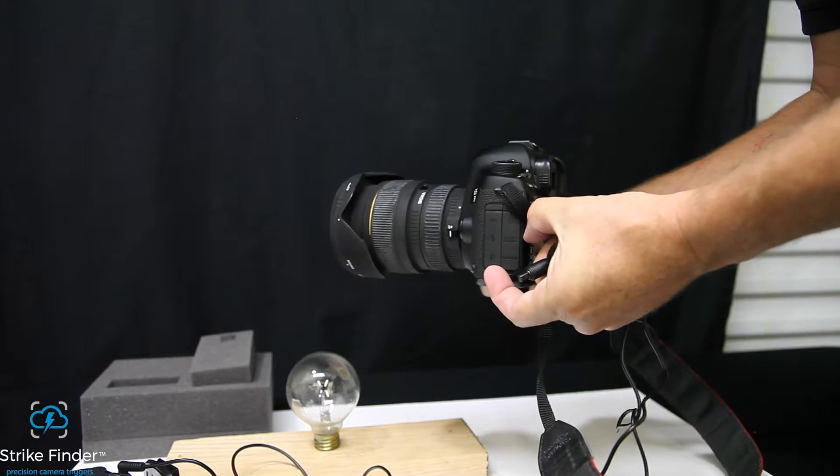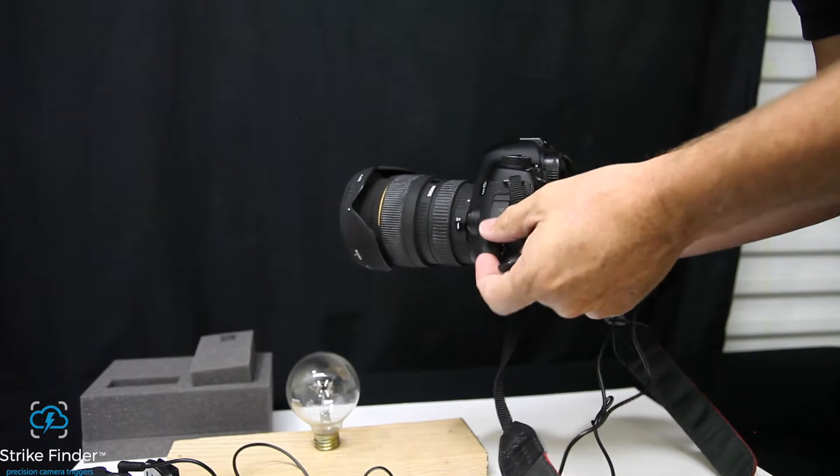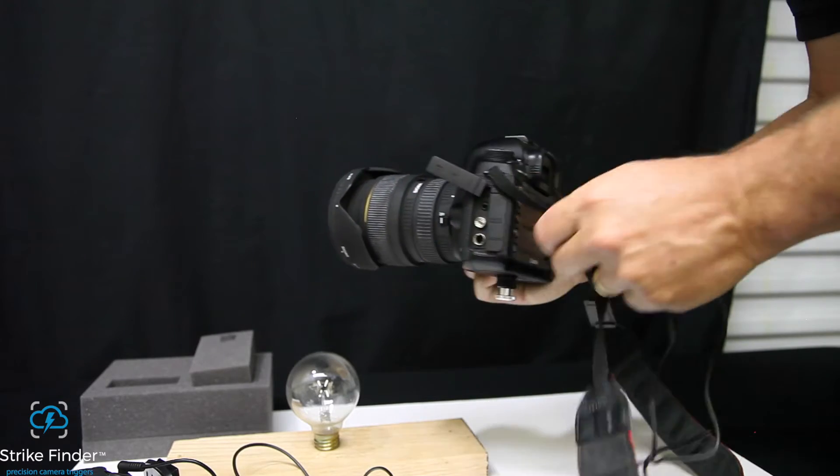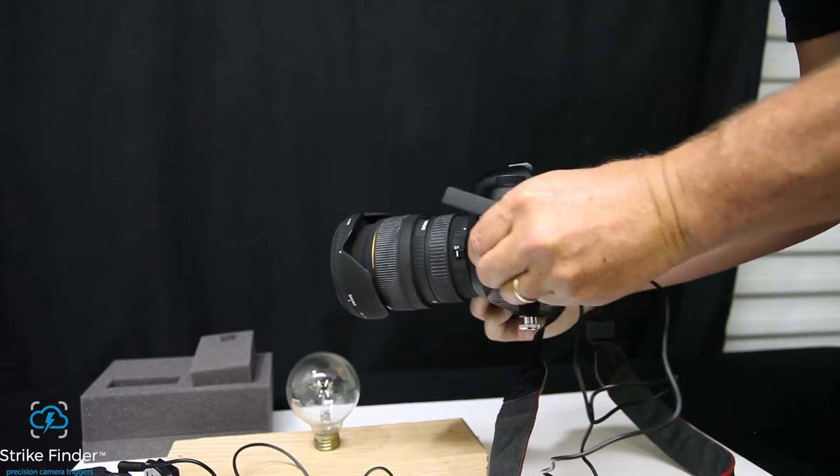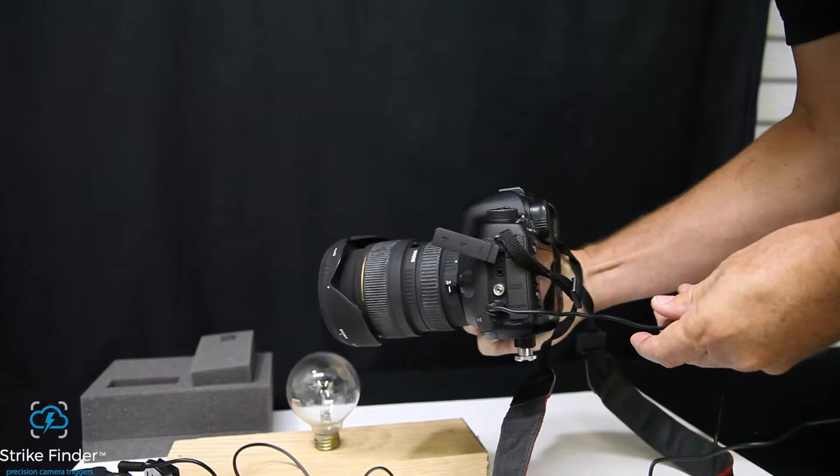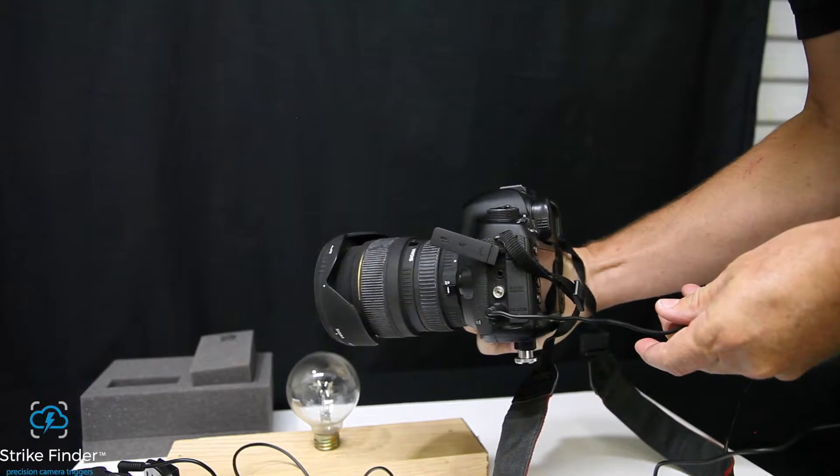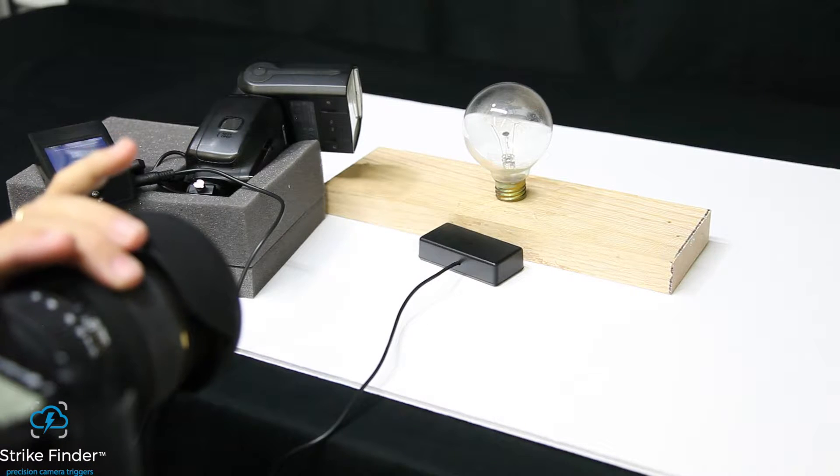Plug your shutter release into the camera. Our shutter settings are one half a second. We found that half a second gives us just enough time to trigger the shutter and then break the light bulb. However, if you're shooting in total darkness, you can use a longer shutter setting.